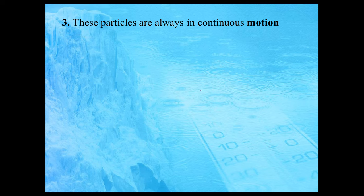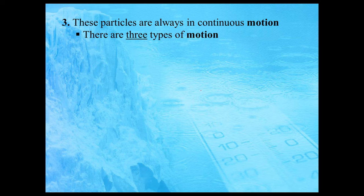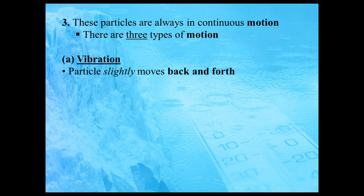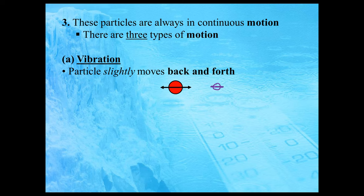These particles are always in continuous motion. I'm going to talk about motion by looking at three different types, and based on these types the particles are going to move just a little bit differently. The first type of motion is called vibration. Particles that vibrate just slightly move back and forth — a little bit to the left, a little bit to the right — oscillating, but the overall position doesn't change. It just stays in place, and that's what we call vibration.